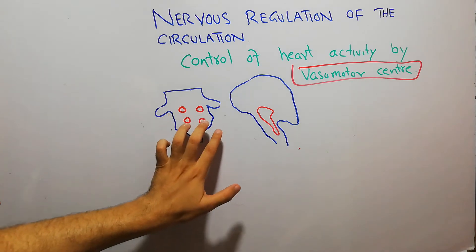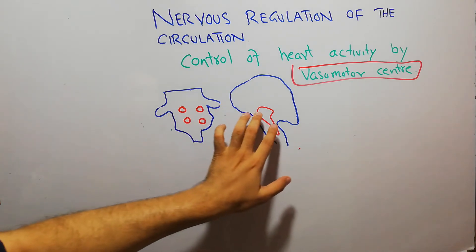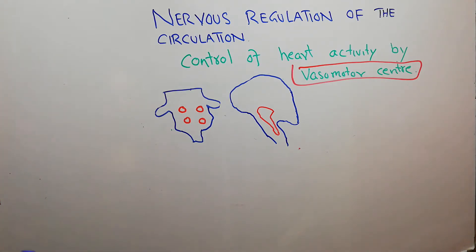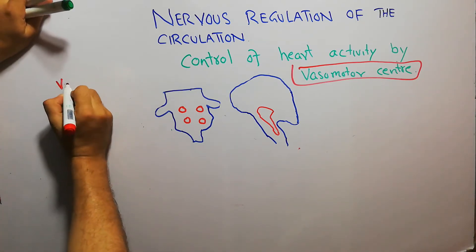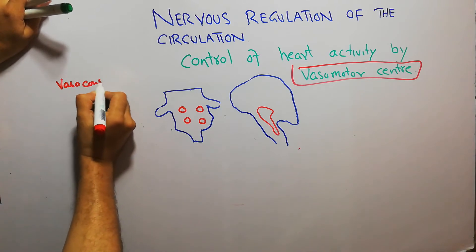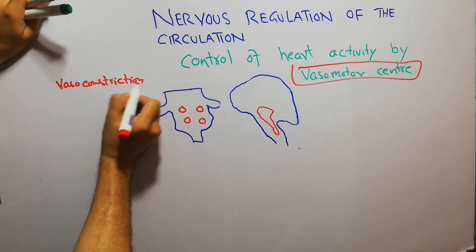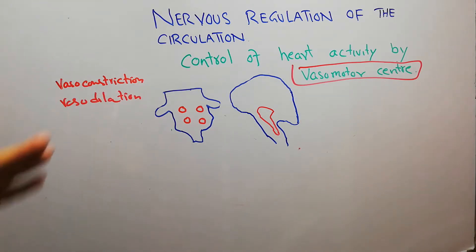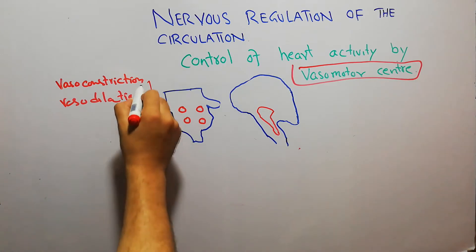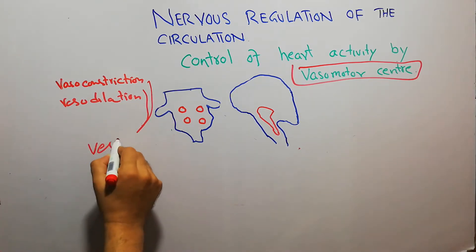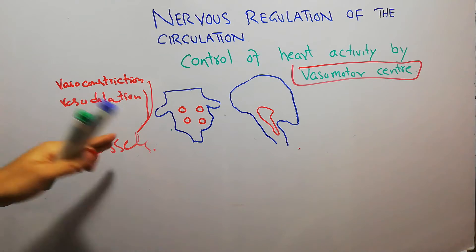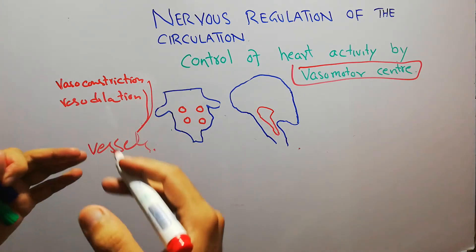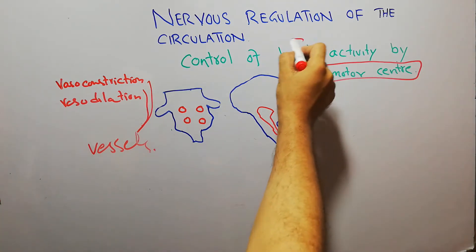These vasoconstrictor areas and vasodilator areas of the Vasomotor Center basically play their role in vasoconstriction and vasodilation of blood vessels. But apart from blood vessels, the Vasomotor Center is also playing its role in increasing and decreasing the activity of the heart.